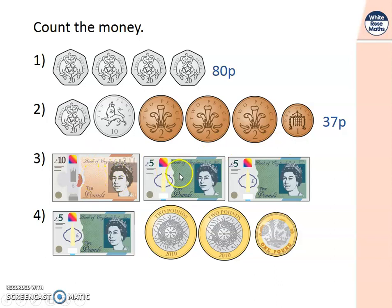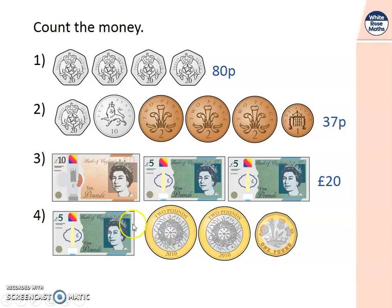Here we've got a 10 pound note, add a 5 pound note, that's 15, add 1 more 5 pound note, that's 20 pounds. On the bottom here we've got a 5 pound note, add on a 2 pound coin, a 2 pound coin, and a 1 pound coin — 5, add 5, is 10 pounds.